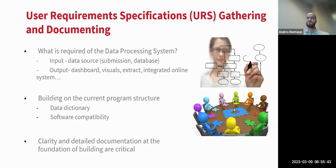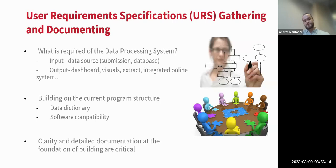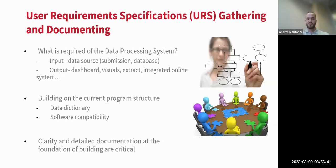You also need to be clear about software compatibility. If you want it in Excel, specify that the data is coming from Excel. If your reporting requirements are monthly, specify monthly intervals. Note that Datum or DHIS-2 may only accept CSV files rather than Excel, so you may need to specify a CSV option. Clarity and detailed documentation at the foundation is critical — you do not want to spend time building a visualization you don't actually need.